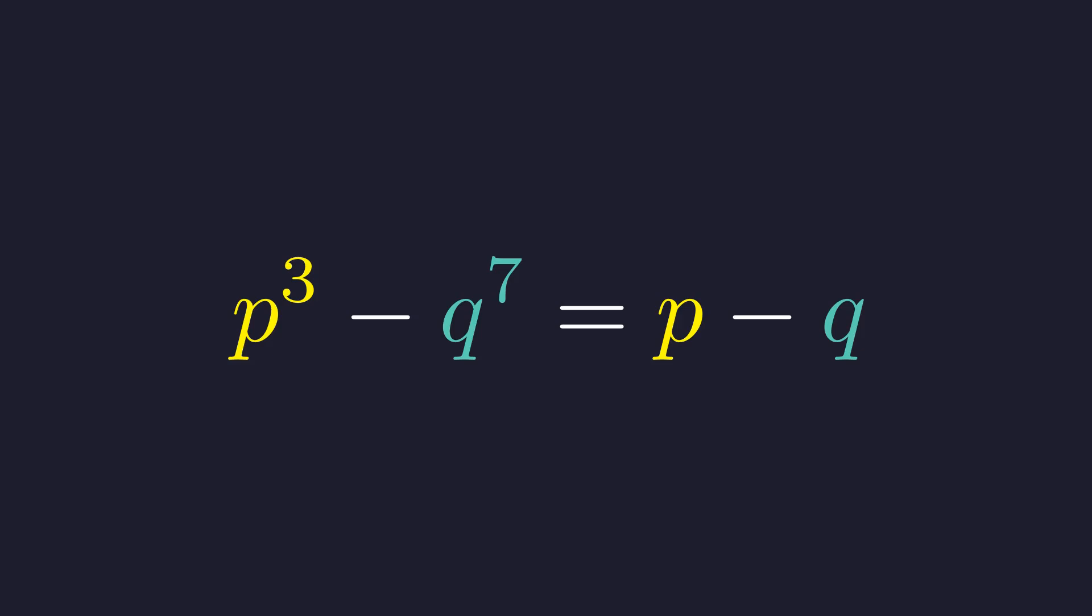A standard strategy for equations of this form is to isolate variables. We will group all terms involving p on one side and all terms involving q on the other to better analyze the equation's structure.